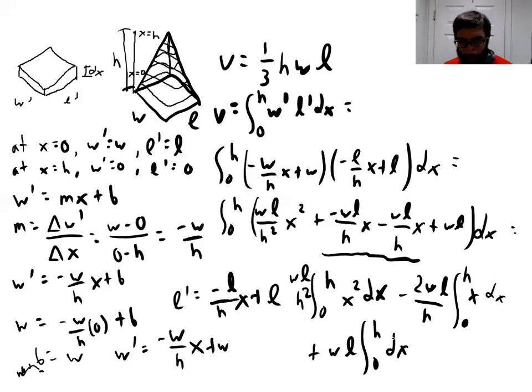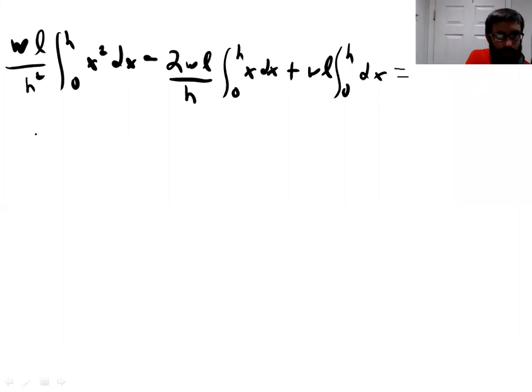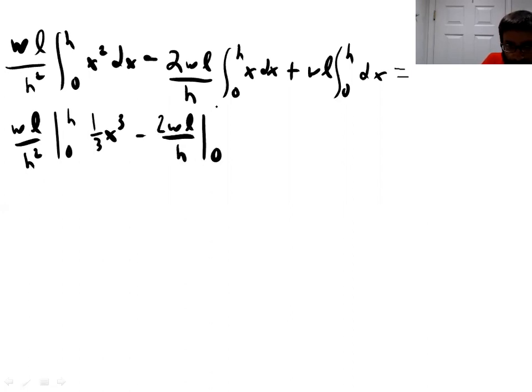And so once we have all of that, we can now go ahead and solve this. So I just copied over what we had there, and now we just need to evaluate these three different integrals. So our constant, WL over H squared from 0 to H, the integral of x squared is 1 third x cubed minus 2 WL over H, integral of x is 1 half x squared, and then plus WL from 0 to H, integral of dx is just x.